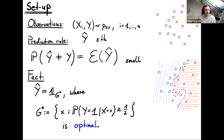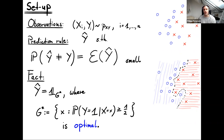There is an interesting fact: there is an optimal prediction rule. This optimal prediction rule is the characteristic function of a set G*, where G* is all x such that the conditional probability P(Y=1|x) is greater than or equal to one half. That's the probability of seeing label 1 given x. This is the optimal classification, but obviously I cannot use it because I don't know this probability distribution. The optimal way to classify is to find two regions and classify everything in one region as 1 and everything in the other as 0.